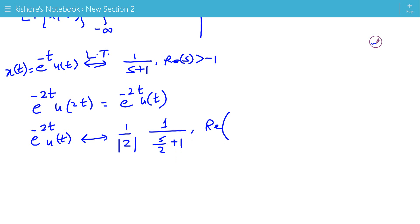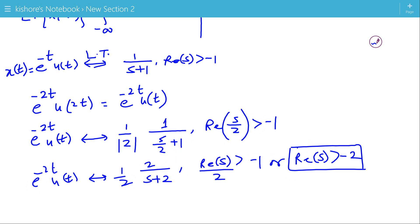So in the ROC again S is replaced by S by 2, so real value of S by 2 should be greater than minus 1. This will be the new ROC, or we can write this as real value of S greater than minus 2. So this will be the scaled ROC or the new ROC. And the Laplace Transform is 1 upon S plus 2 with ROC real value of S greater than minus 2.